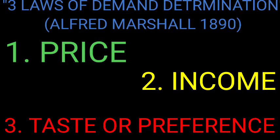Good evening everyone. This evening we are going to shed some light on an economic subject introduced by Alfred Marshall in 1890. The title is 'Three Laws of Demand Determination.' According to Alfred Marshall, there are only three things which can determine the surge in demand of your product. These three laws are: number one, price of the product; number two, income of the consumer; and number three, taste or preference of the consumers.